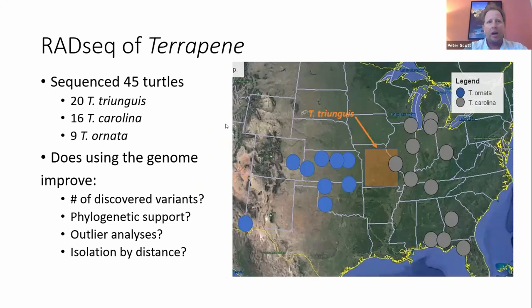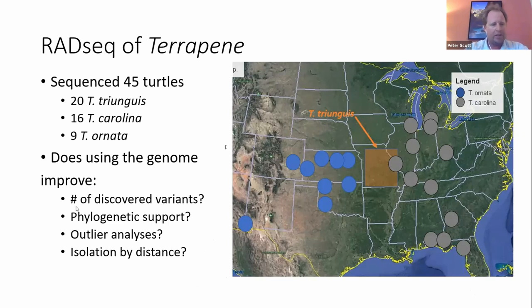We did RadSeq of some box turtles with fairly light geographic sampling — we sequenced 20 three-toed box turtles, 16 Eastern box turtles, and nine ornate box turtles. We wanted to ask: does using the genome increase the number of variants we're able to discover, phylogenetic support for how these populations are related to each other, potentially outlier analyses, and isolation by distance studies.